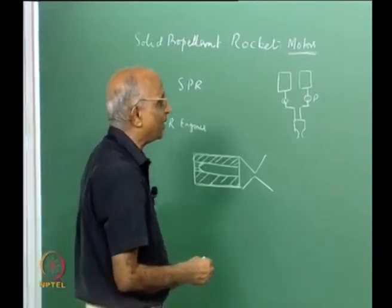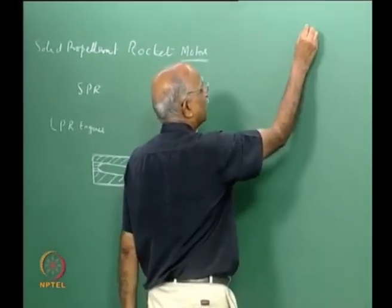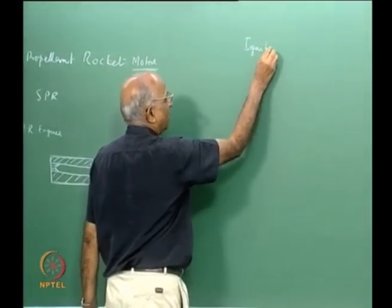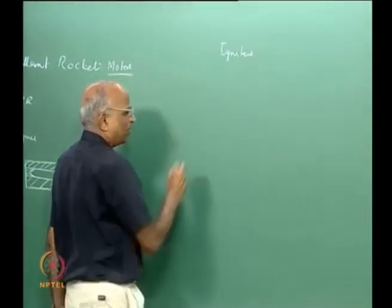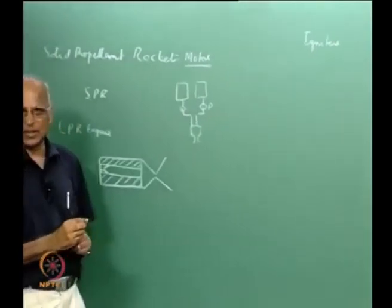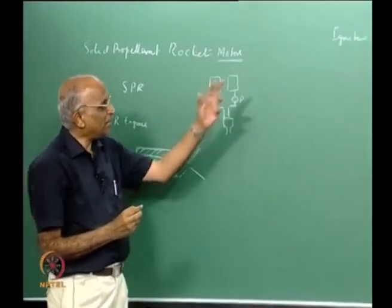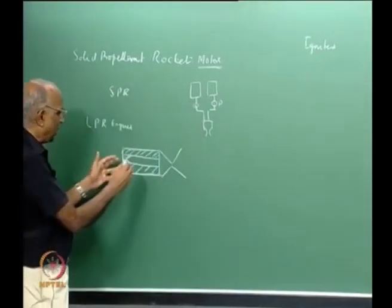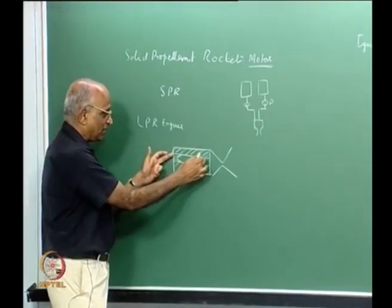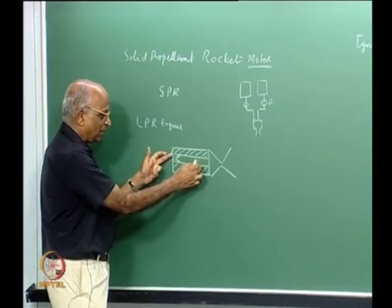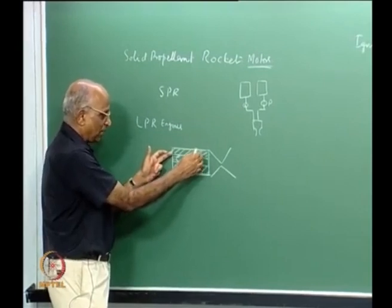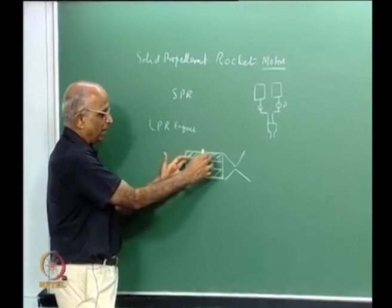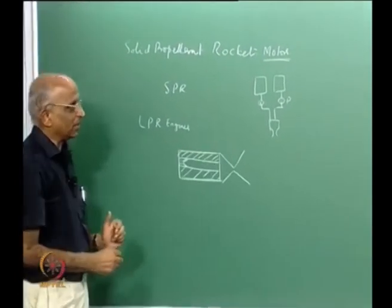Let us go back and see where we were last time. We talked about igniters, and before that we were very clear how to design the burning surface area, define the grain configuration, and determine the required thrust. We can now design the grain and therefore the solid propellant rocket itself.